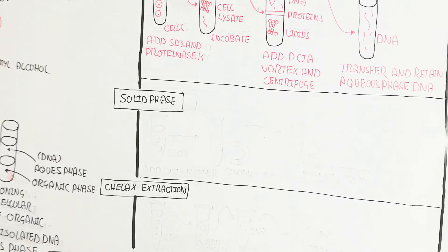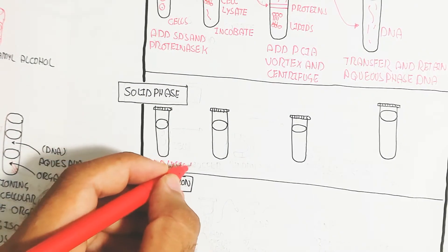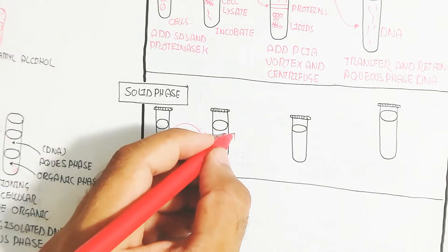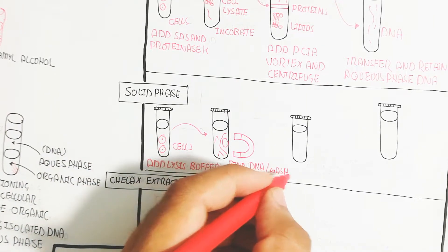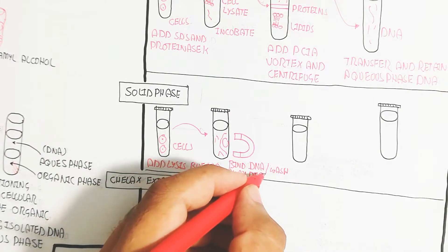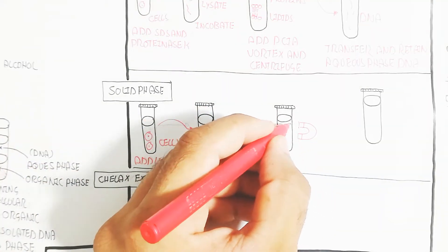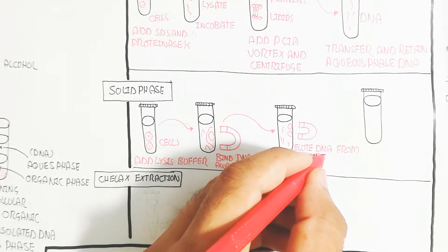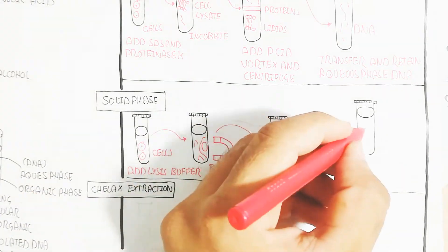Next is the solid phase. Add lysis buffer. This lysis buffer is used for the sampling to bind DNA and wash away debris. After washing away the debris, elute DNA from magnetic beads. Transfer and retain the extracted DNA.